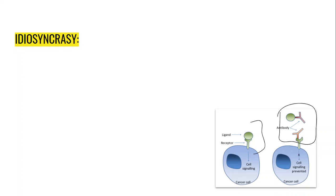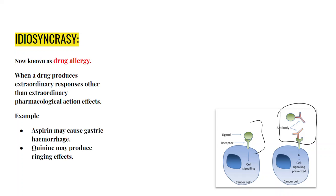The next factor is idiosyncrasy, now known as drug allergy. When a drug produces extraordinary responses other than its normal pharmacological action, it is known as drug allergy. For example, aspirin may cause gastric hemorrhage, and quinine may produce ringing effects in the ears.